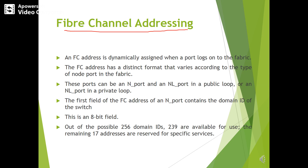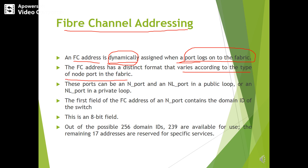Next we will look at fiber channel addressing. The FC address is dynamically assigned when a port logs onto the fabric. The FC address has a distinct format that varies according to the type of node port in the fabric. These ports can be either an N port, an NL port in a public loop, or an NL port in a private loop.